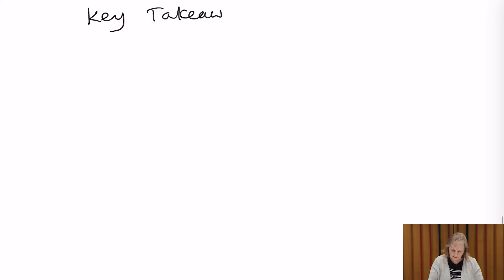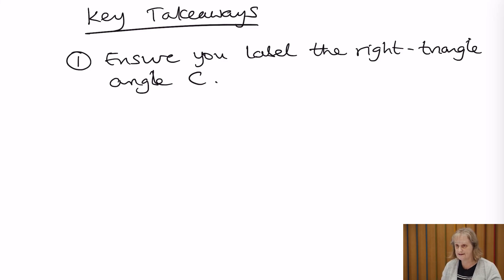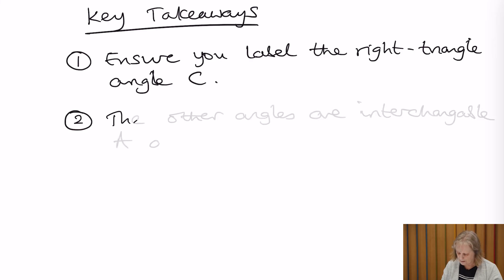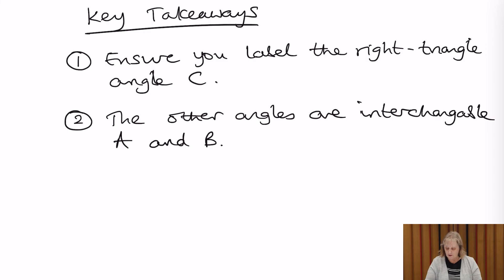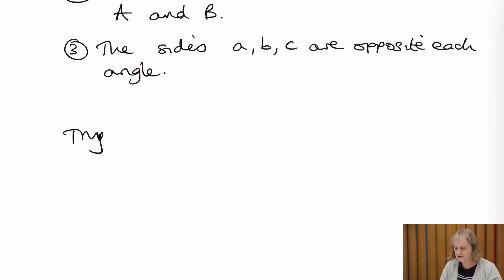Some key takeaways to set you up for success with any Pythagorean theorem question: First, always label the right triangle with uppercase C at the 90-degree angle — that's your starting point for completing the labeling. The other angles are interchangeable, uppercase A or B, as we saw in the examples. Finally, the sides lowercase a, b, and c are opposite their respective angles.